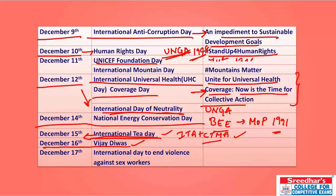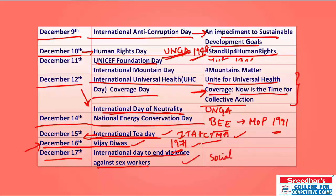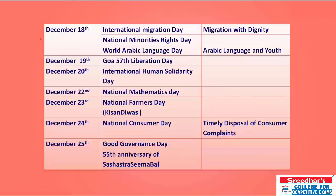December 16th is celebrated as Vijay Diwas to commemorate India's victory over Pakistan in the 1971 war — the war for independence of Bangladesh from Pakistan. This date marks the end of the Bangladesh Liberation War. International Day to End Violence Against Sex Workers is observed on December 17th, calling attention to hate crimes committed against sex workers worldwide and the need to remove social stigma and discrimination.